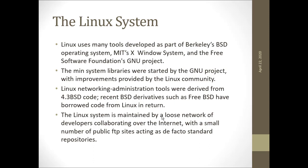The minimum system libraries were started by the GNU project with improvements provided by the Linux community. Linux networking administration tools were derived from 4.3 BSD code. Recent BSD derivatives such as FreeBSD have borrowed code from Linux in return. The Linux system is maintained by a loose network of developers collaborating over the internet, with a small number of public FTP sites acting as de facto standard depositories.